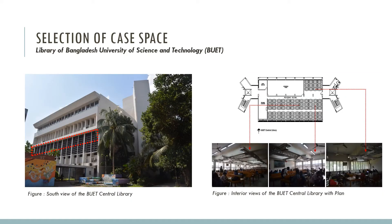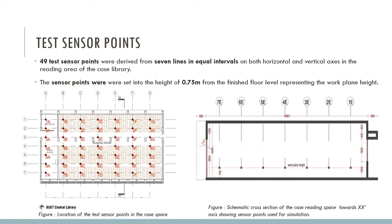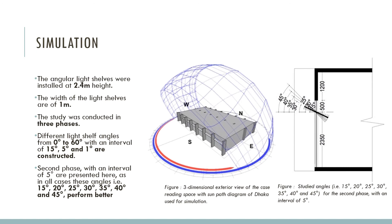As the case space, the central library of Bangladesh University of Engineering and Technology was selected, considering its size, width, orientation, and potential for daylight inclusion. It is north-south oriented, which is ideal for tropical climates such as Dhaka. It has a capacity of 72 reading tables, accommodating 288 readers, with an area of 462 square meters. 49 test sensor points were derived from 7 lines at equal intervals on both horizontal and vertical axes in the reading area. Sensor points were set at a height of 0.75 meters from the finished floor level, representing the work plane height.